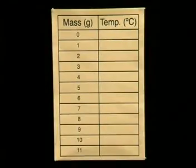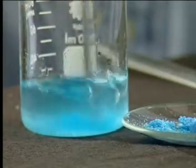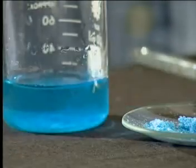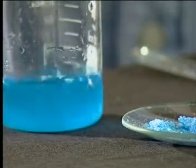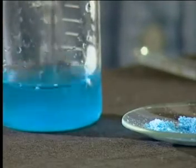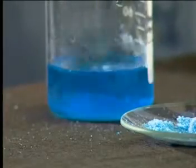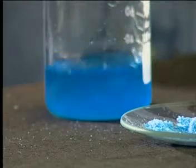As always, we need a table to record our results. Notice that the colour of the solvent changes when I add the solute to it. The blue solution formed is due to the presence of copper 2+ ions. We need to repeat the same procedure each time and make sure that the solute has dissolved completely before taking the temperature reading.